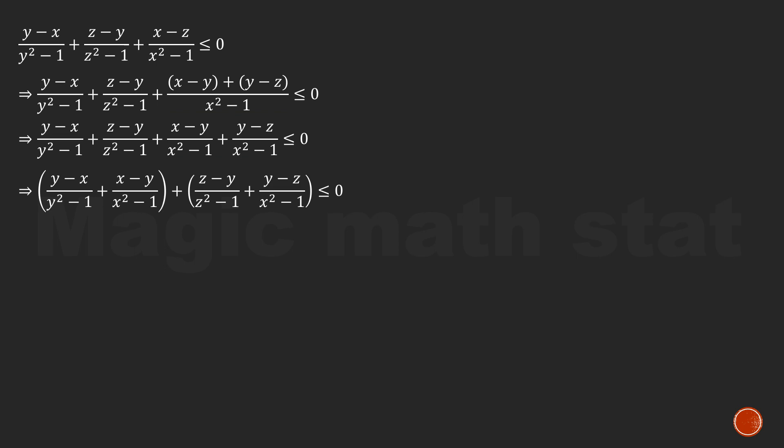Now we are going to pair similar terms again. So (y-x)/(y²-1) plus (x-y)/(x²-1) is in one bracket, and in the second bracket we have (z-y)/(z²-1) plus (y-z)/(x²-1). The whole expression is less than or equal to 0.